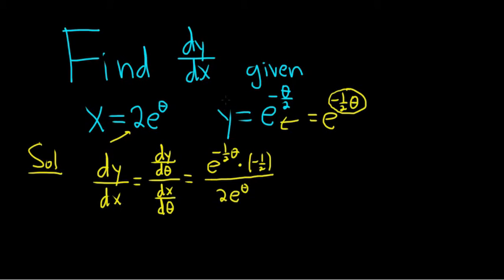When we took the derivative of this piece here, it's its own derivative, and then you multiply by the derivative of the inside. That's the chain rule. And then dx/dθ is just the derivative of x with respect to theta. The derivative of e^θ is e^θ, so nothing happens there.